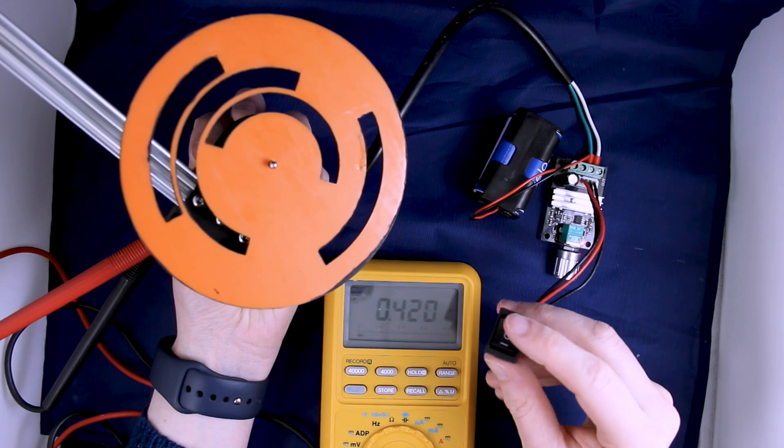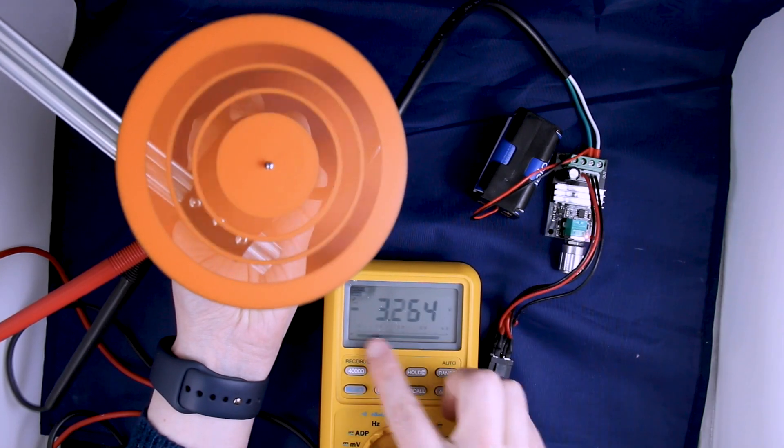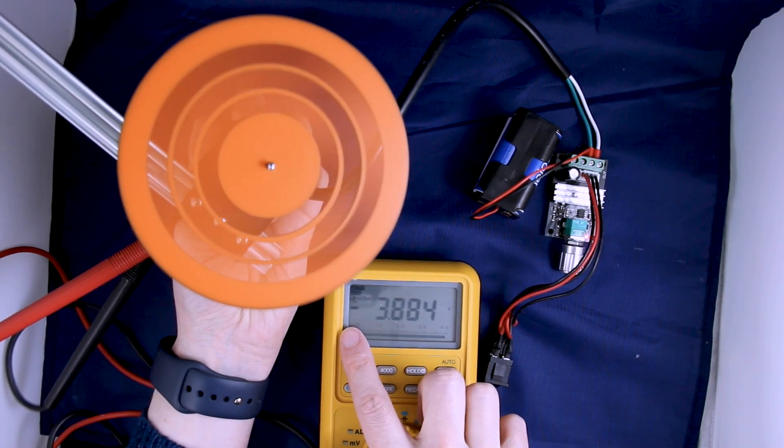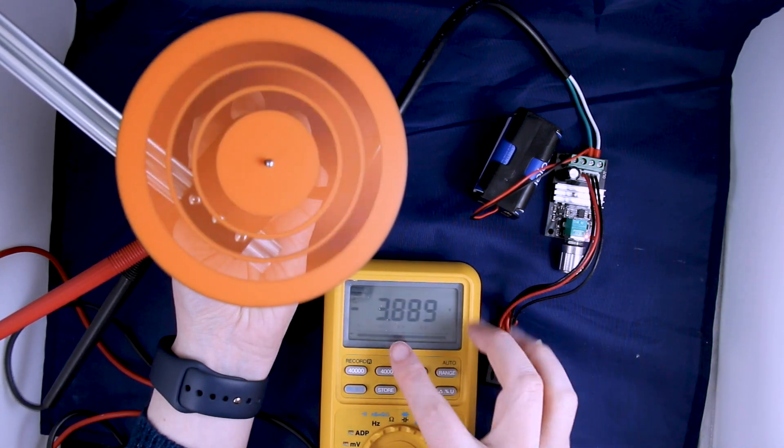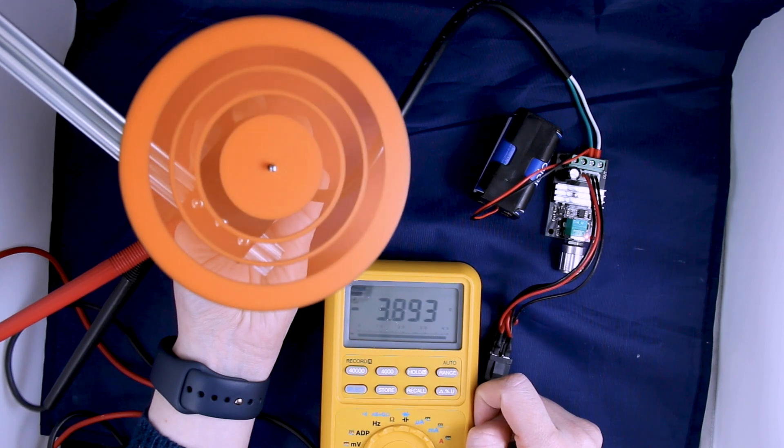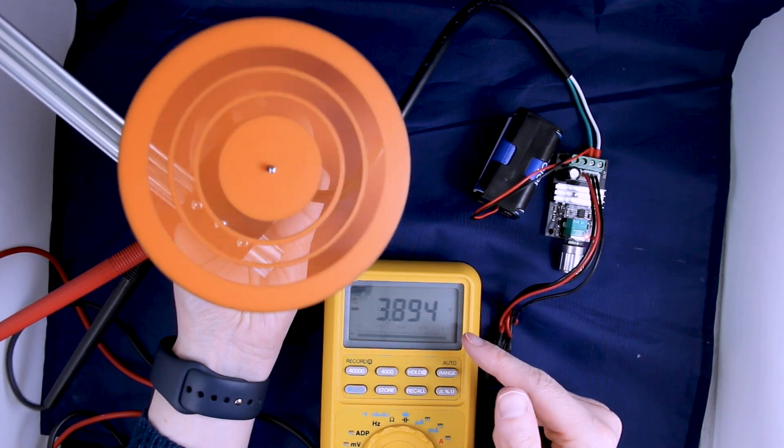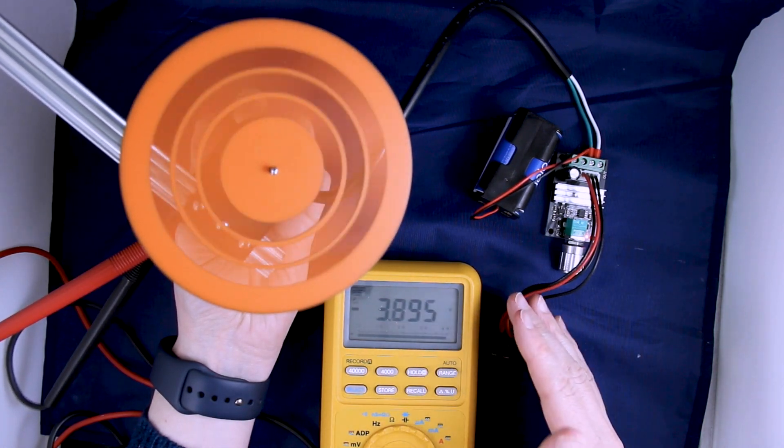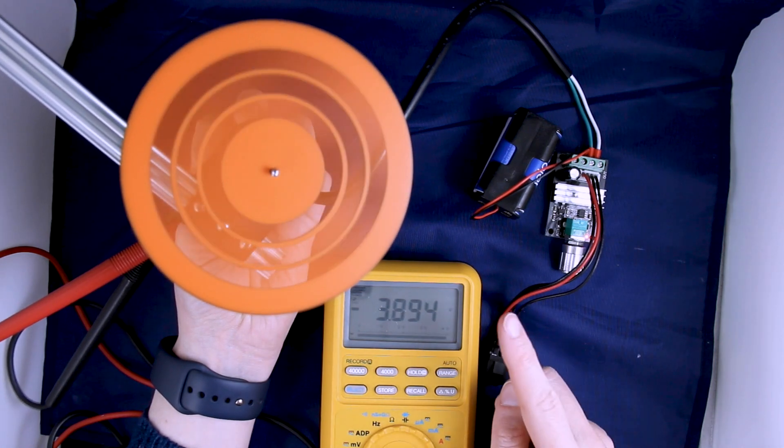And as we're increasing our voltage we're also increasing our speed that our motor is driving at. But if I go into the upper position then we can see that there is a negative right here. So we are about negative 3.8 volts and we're spinning in the opposite direction.